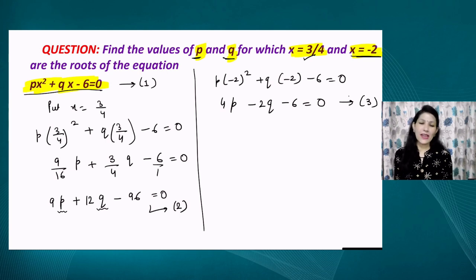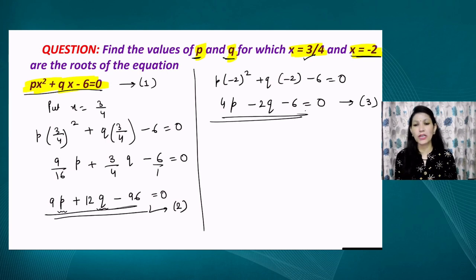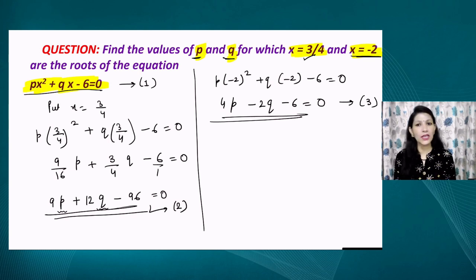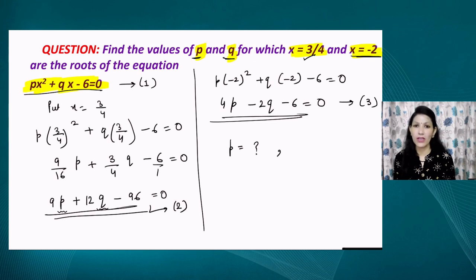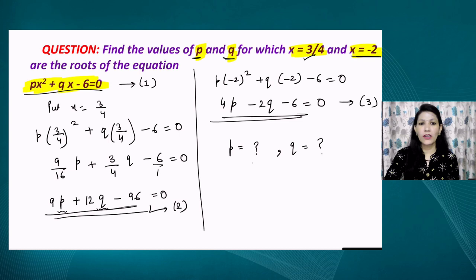Dear viewers, equations 2 and 3 are both linear equations in two variables P and Q. We already know how to solve linear equations in two variables. You can solve these equations by any method you have learned — substitution method or elimination method — and you will be able to find the values of P and Q. It is totally up to you which method you prefer. So now let us proceed ahead.